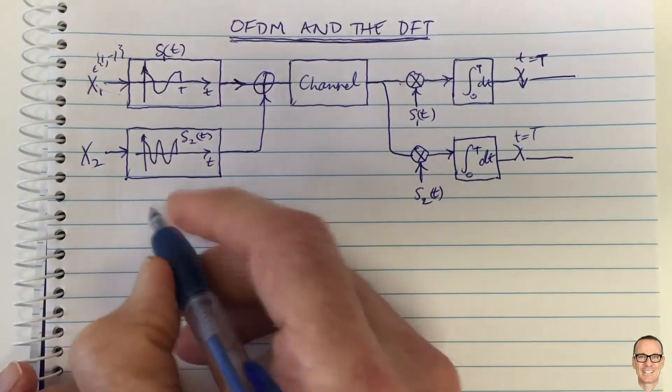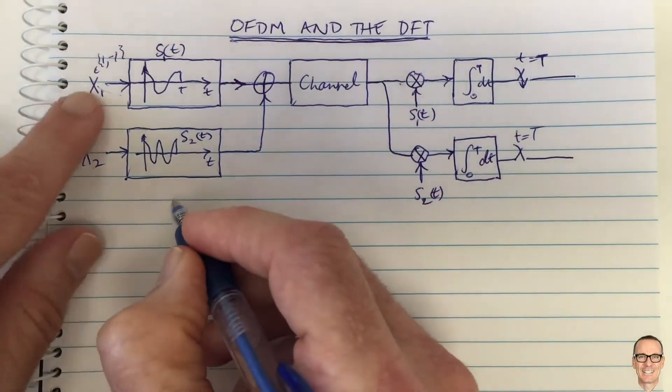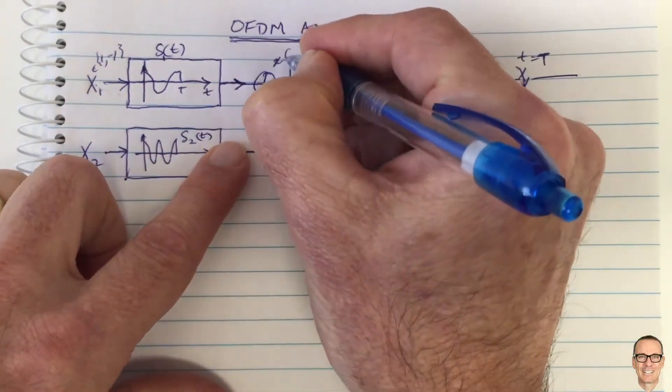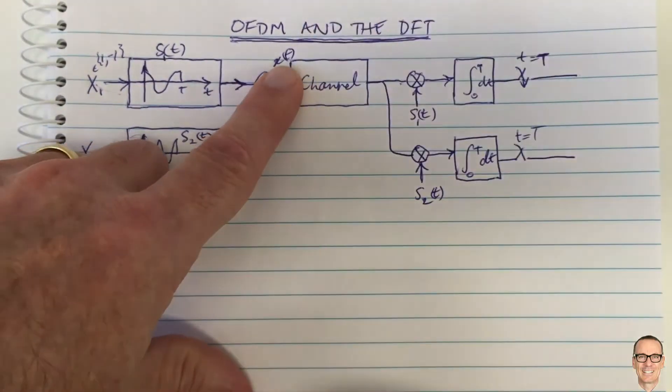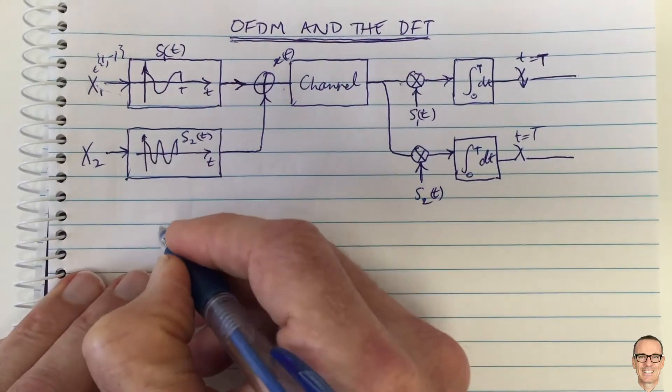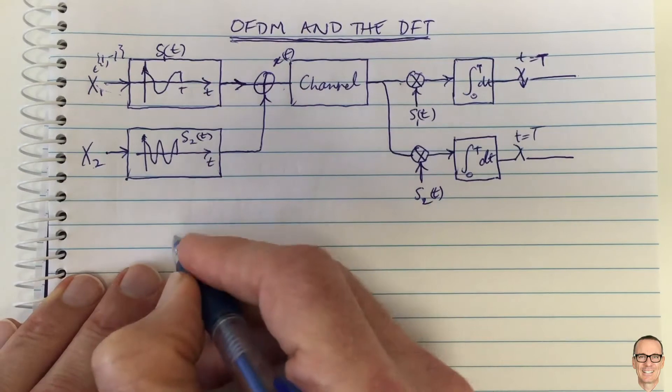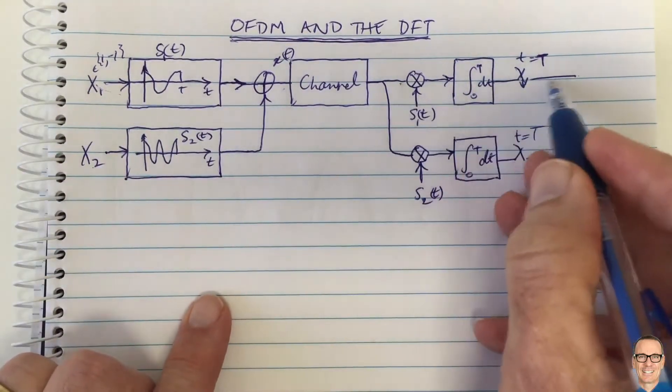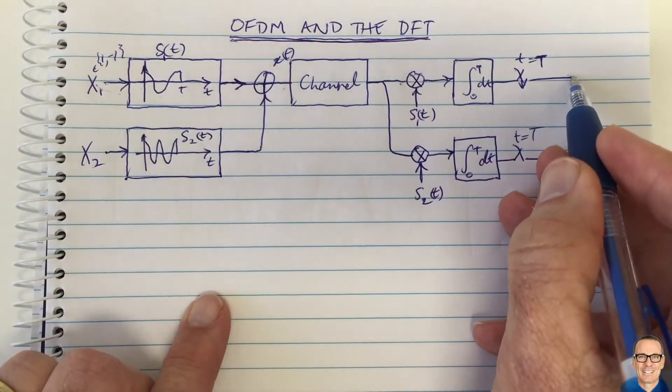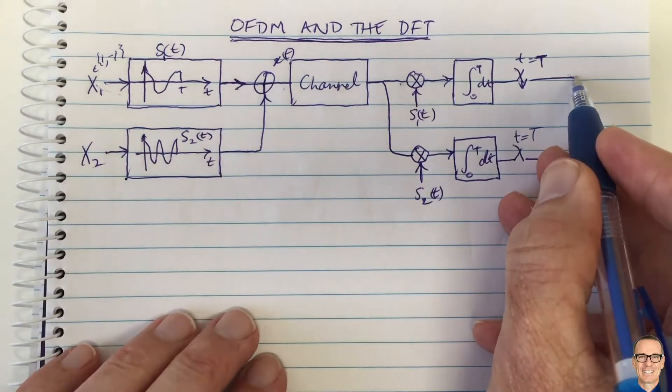The signal now, if we call this signal here x(t), the transmitted signal x(t)—well, just before I do that, let me write down what's happening over here at this receiver, for example, just to demonstrate to you that it's orthogonal.